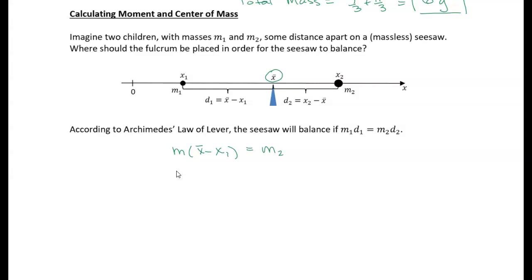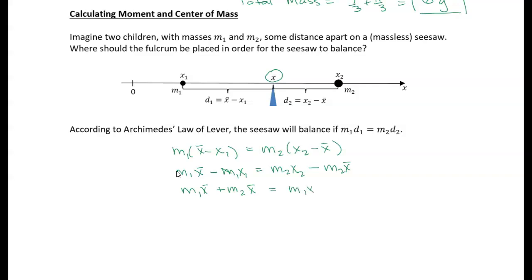That equals m2 times the distance from the center of mass to X2, which is X2 minus X-bar. Now let's rearrange to solve for X-bar, the center of mass. Multiplying through: m1·X-bar minus m1·X1 equals m2·X2 minus m2·X-bar. Moving all terms with X-bar to one side: m1·X-bar plus m2·X-bar equals m1·X1 plus m2·X2.